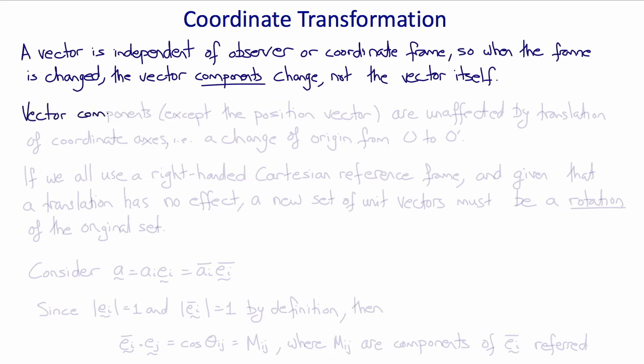With the exception of the position vector, the vector components will be unaffected by a translation of the coordinate axes, i.e., a change of the origin from say o to o prime.